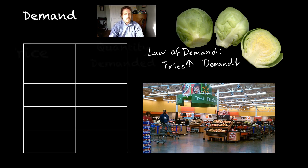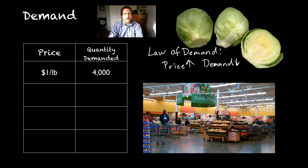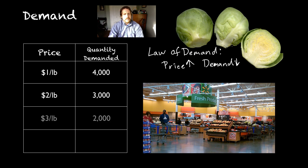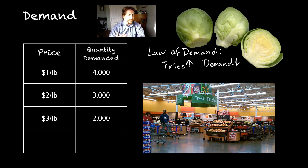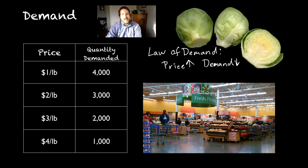Let's take a look at what that would look like on the same kind of table. On the left-hand side you've got the price, and on the right-hand side you've got how much people are willing to buy. At $1 a pound, that's pretty cheap for Brussels sprouts, so a lot of people buy them — 4,000 pounds. At $2 a pound, it's a bit more expensive, so only 3,000 pounds are purchased. At $3 a pound, even fewer people are willing to buy, so maybe only 2,000 pounds. At $4 a pound — really expensive for Brussels sprouts — only 1,000 pounds would be sold. As the price goes up, the amount of Brussels sprouts people are willing to buy goes down.